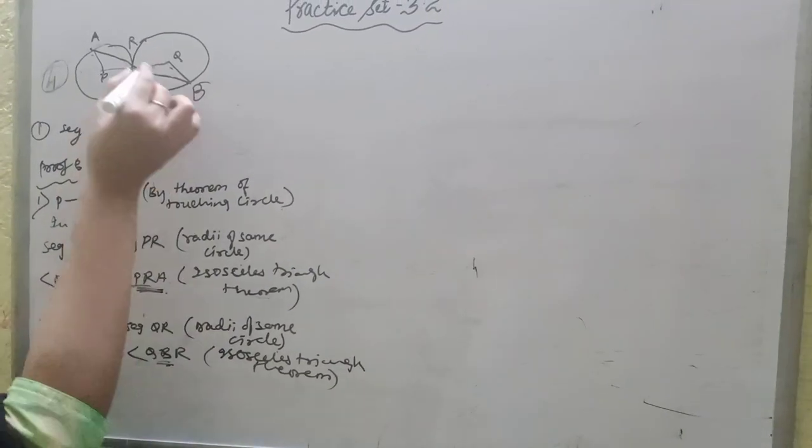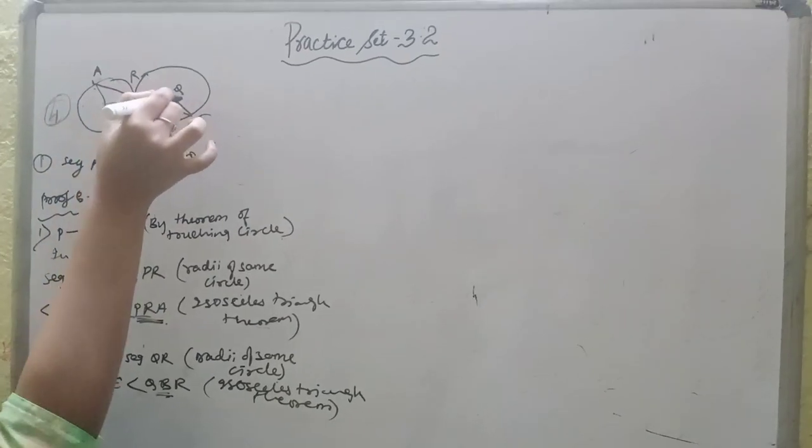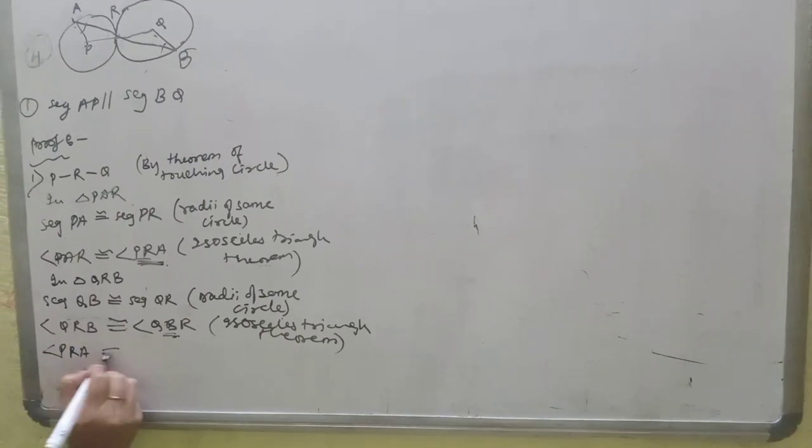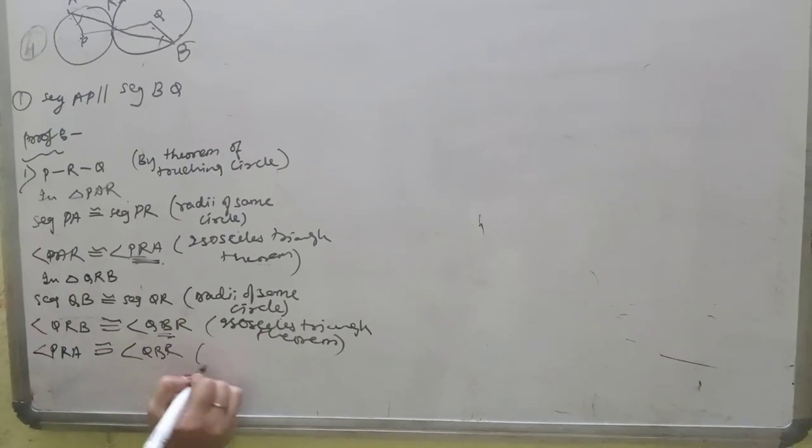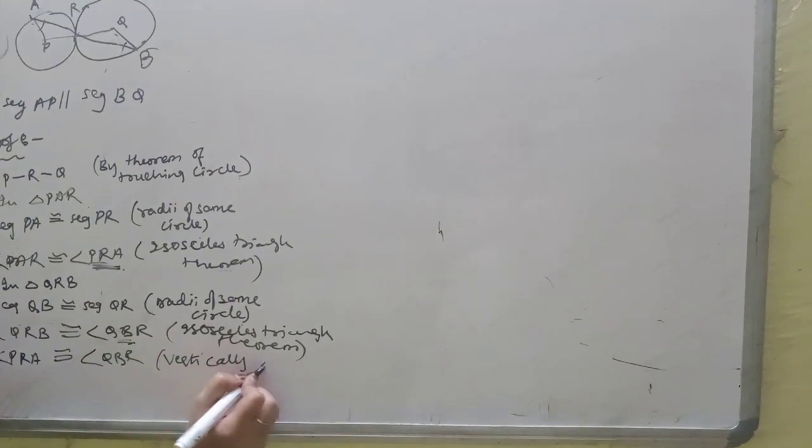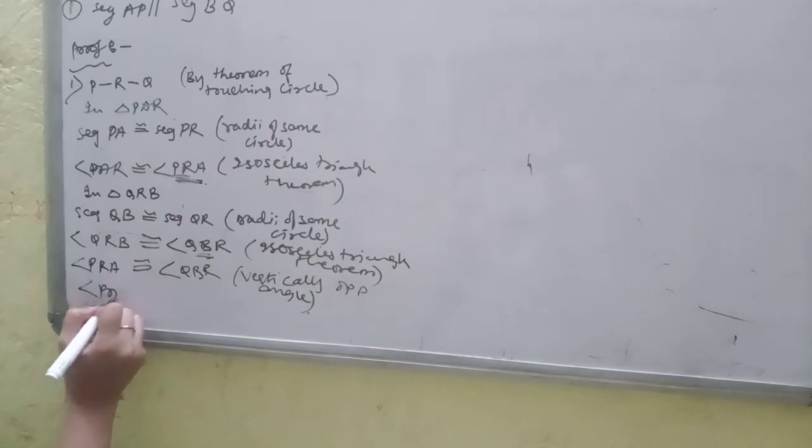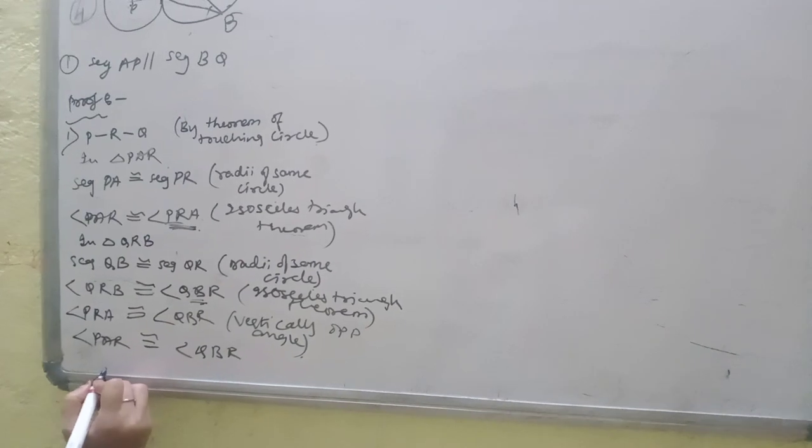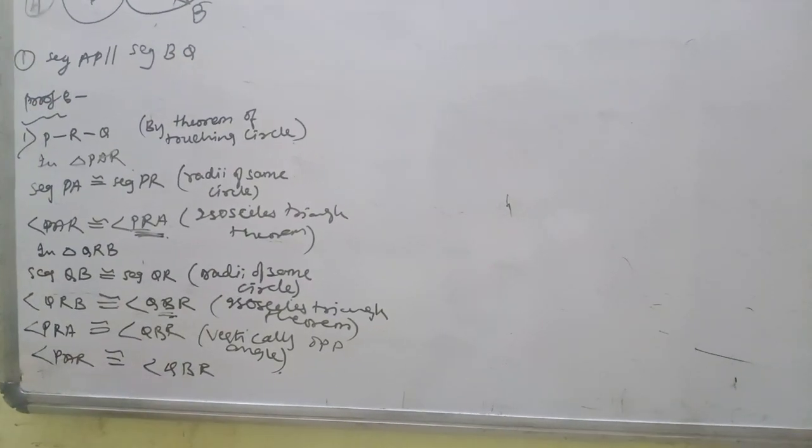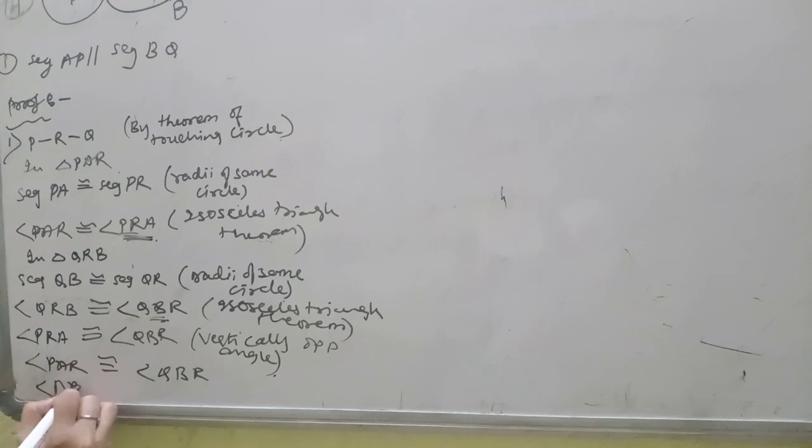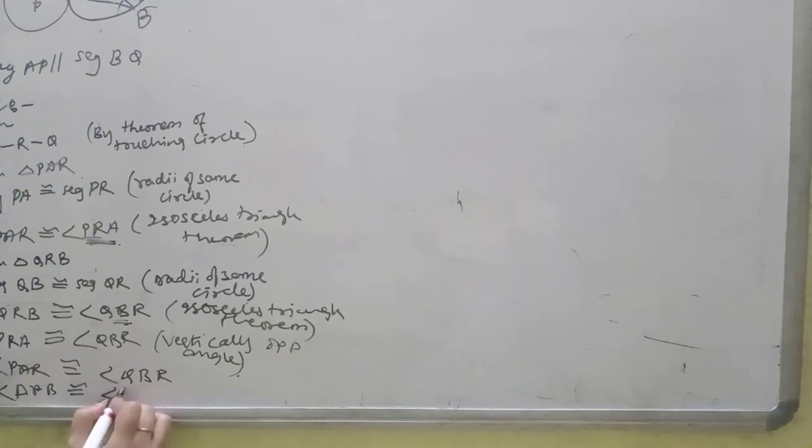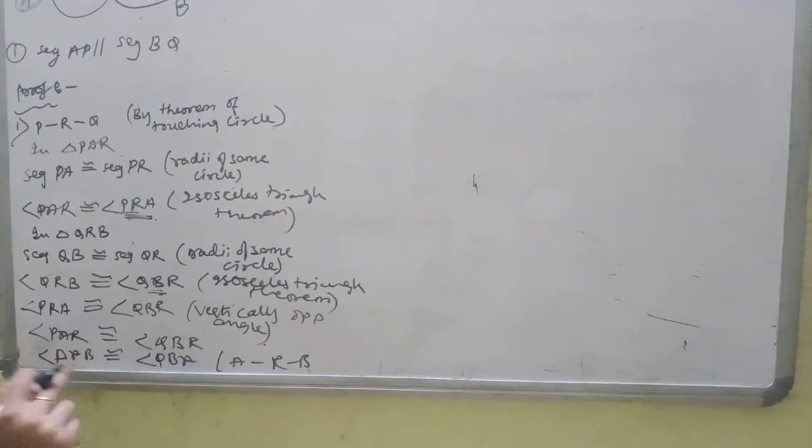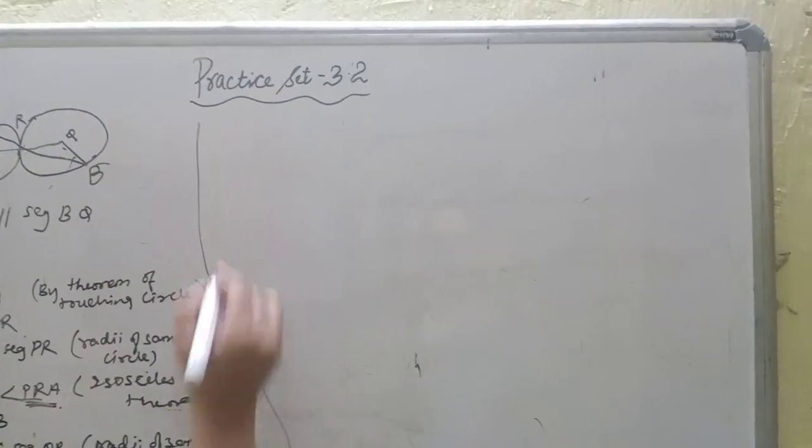These two, look at PRA and QBR. Angle PRA is congruent to angle QBR. This is Vertically Opposite Angle. Angle PAR will be congruent with angle QBR. This means angle PAB and angle QBA. Angle PAB is congruent to angle QBA.